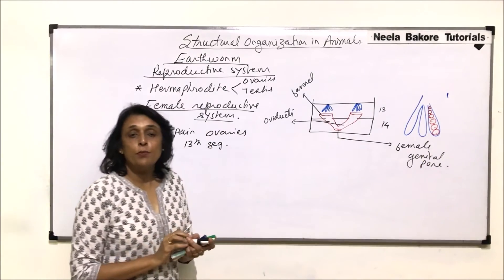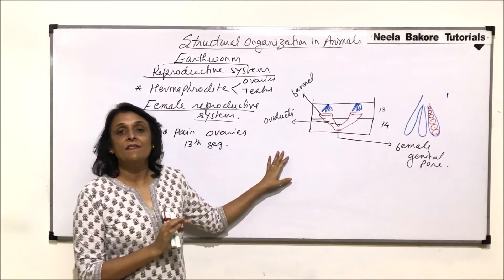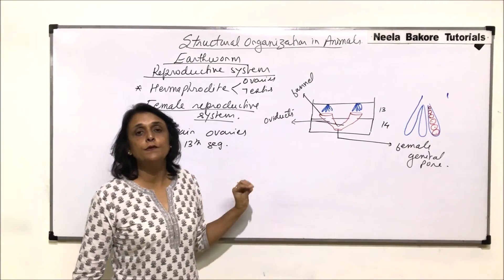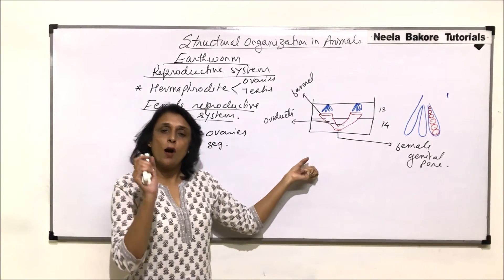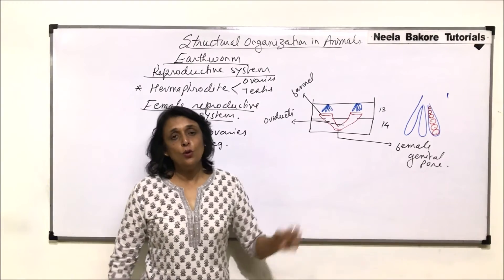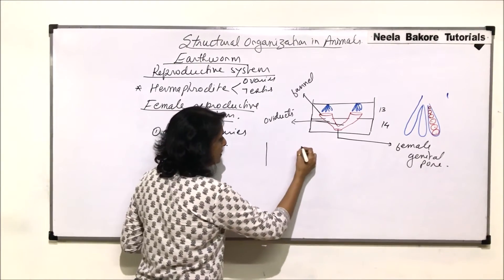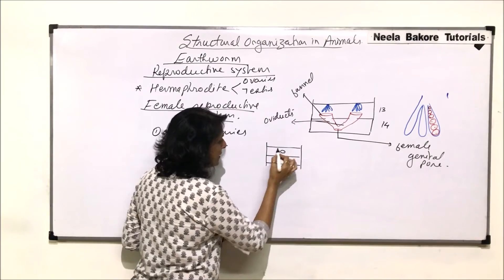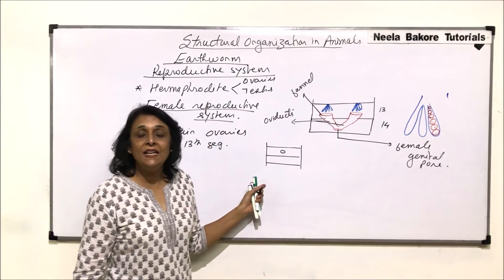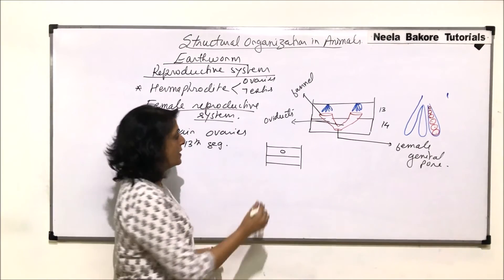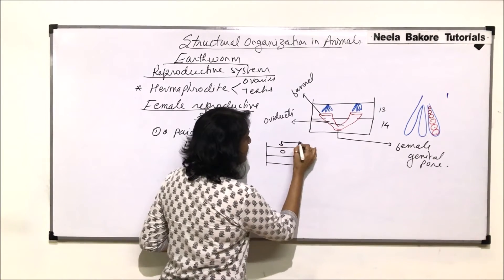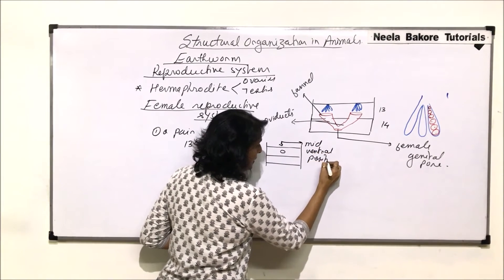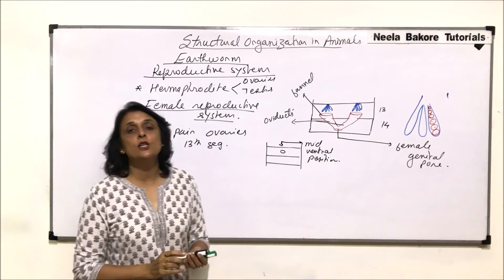The female reproductive system is comparatively very simple. Just a pair of ovaries to collect them, two funnel-like openings of the ova ducts. They fuse to form a common small duct which opens through one common opening. In the 14th segment there is one median, mid-ventral female genital pore. This is the mid-ventral position, and from here the eggs would be released.